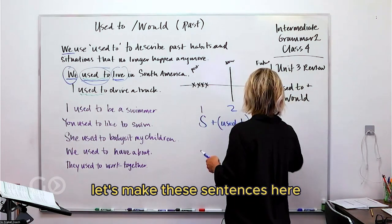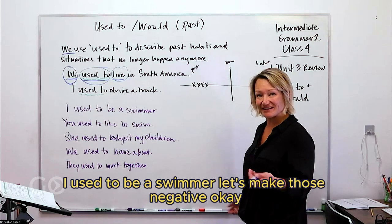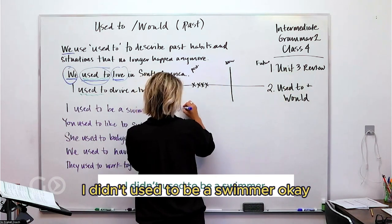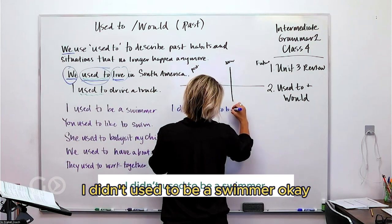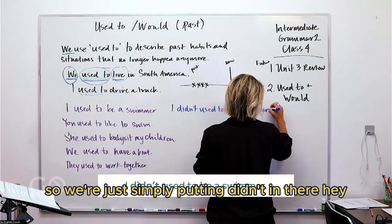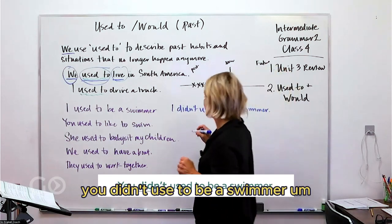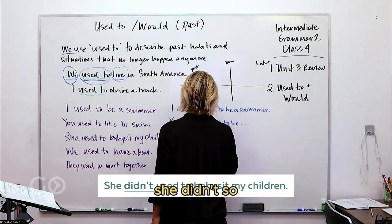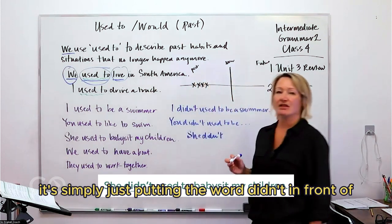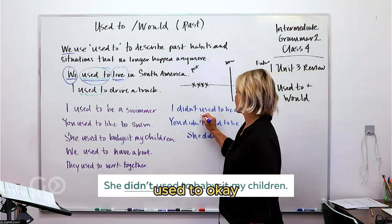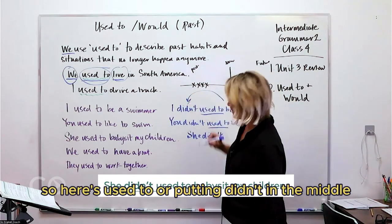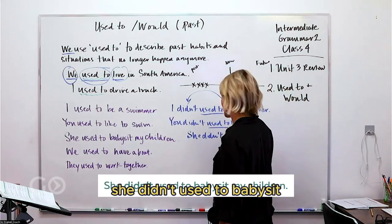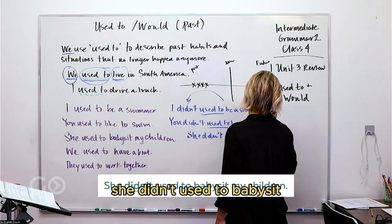Before we go on, let's practice. Let's make these sentences negative. 'I used to be a swimmer' becomes 'I didn't use to be a swimmer.' We simply put 'didn't' in there. 'You didn't use to be a swimmer.' 'She used to babysit' becomes 'She didn't use to babysit my children.' It's simply putting 'didn't' in front of 'used to.'